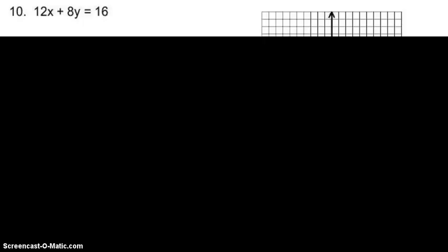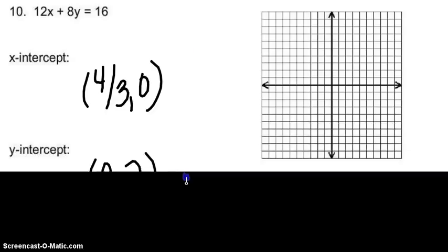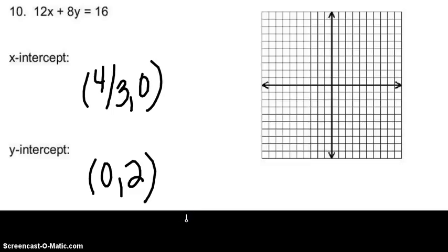For number 10 — which is 12x plus 8y equals 16 — follow the exact same steps from number 9. Your x-intercept should be four-thirds comma zero and your y-intercept should be zero comma two. If you have trouble with number 10, let me know and I'll help find the mistake. Use these 10 examples to answer the next two pages. This is a low makeup grade — if you complete it, it will make up two of your low daily assignments.